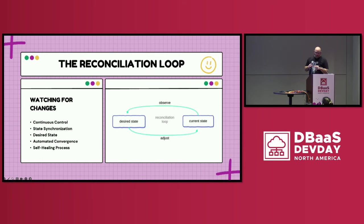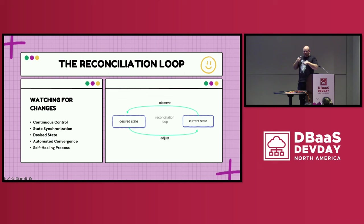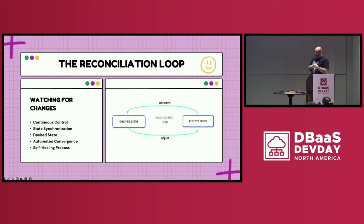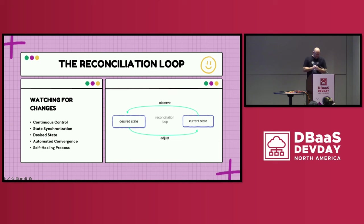So what is that operator doing? It's looking at this reconciliation loop. We're defining what our database service needs to look like via underlying YAML, and it's going to constantly check whether that desired state has been achieved. So if you want three pods in your Postgres deployment, it's going to constantly go through — observe and adjust what that needs to look like. That's going to allow us to update things, and it's going to be synchronizing the state between the three or however many pods or nodes you have within your cluster.